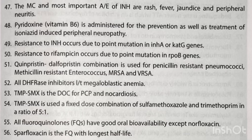The most common and most important adverse effects of isoniazid are rash, fever, jaundice and peripheral neuritis. Pyridoxine (vitamin B6) is administered for the prevention as well as treatment of isoniazid-induced peripheral neuropathy. Resistance to INH occurs due to point mutation in inhA or katG genes. Resistance to rifampicin occurs due to point mutation in rpoB genes. Quinupristin-dalfopristin combination is used for penicillin-resistant pneumococci, methicillin-resistant enterococci, MRSA and VRSA.